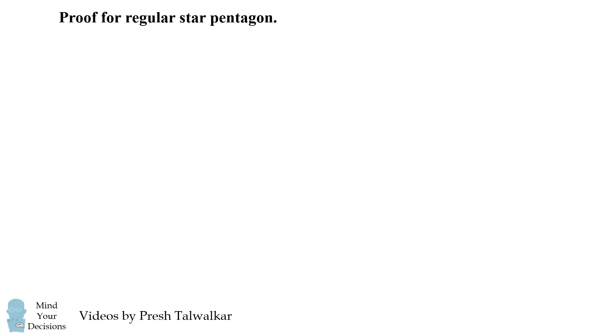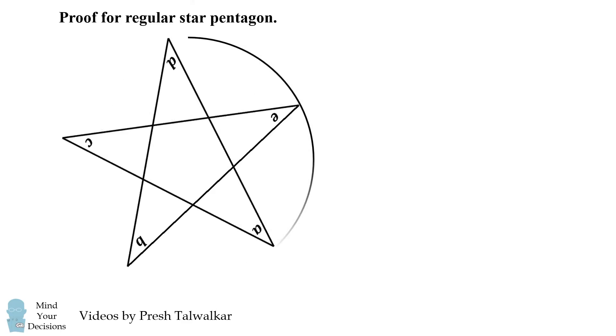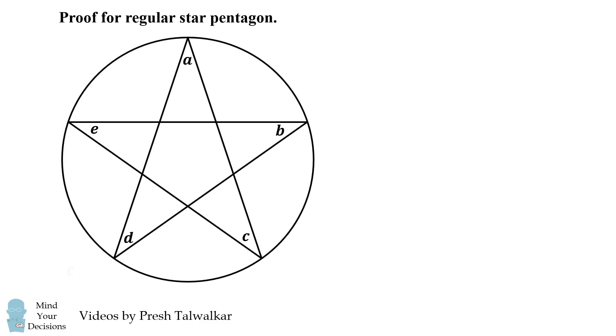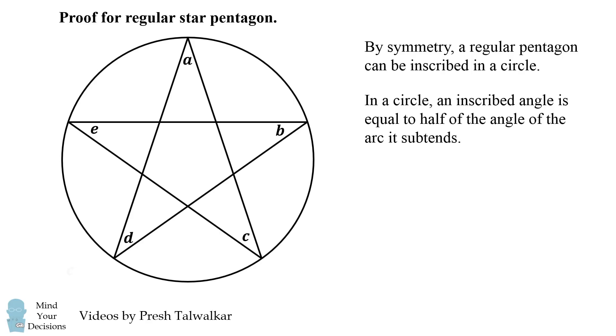So first, let's prove that the answer is 180 degrees for a regular star pentagon. Because of symmetry, we know that this shape can be inscribed in a circle. Furthermore, in a circle, an inscribed angle is equal to half of the angle of the arc it subtends. So this angle A will subtend an arc that's twice as large. So this arc will have a measure of 2A.